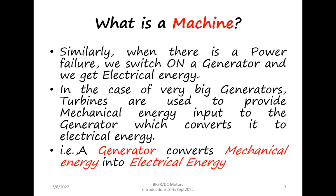Similarly, when there is a power failure, you can switch on a generator and we get electrical energy. In the case of very big generators, turbines are used to provide a mechanical energy input to the generator which converts it into electrical energy. So a generator converts mechanical energy into electrical energy.